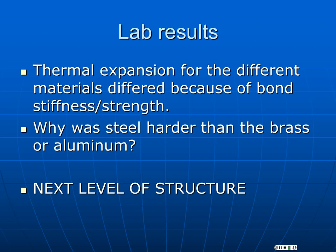Before we start, we want to think back to what you did in lab last week. Last class, we explained why thermal expansion of different materials was different, because of bond stiffness or bond strength, and we looked at the types of bonds. You also ran an experiment where you looked at hardness, or resistance to surface penetration of several materials, and you should have seen that brass was significantly harder than aluminum. So the question is: why this difference? The difference is not simply a question of who has stronger bonds — it's not just the atomic bond level.